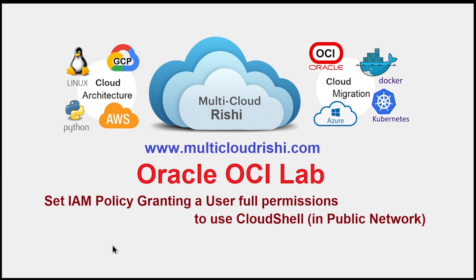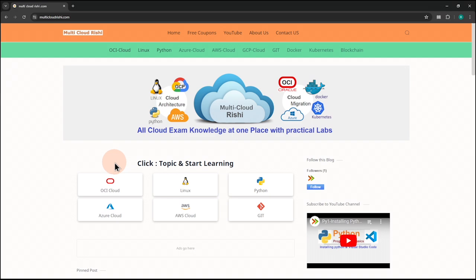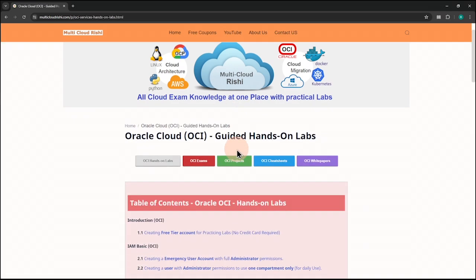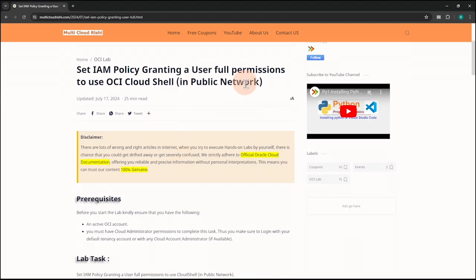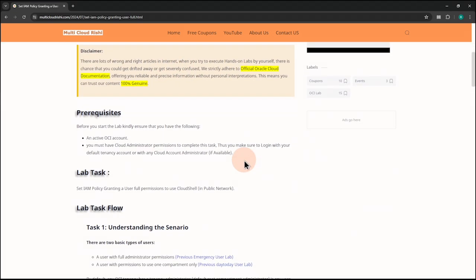Pranam friends. Today's lab is about setting IAM policy granting a user full permissions to use Cloud Shell, in a public network. All the instructions for this lab are given at www.multicloudrishi.com. For today's lab, we have to go to OCA Cloud and under the guided hands-on labs, you can find this one: Set IAM Policy. Let us start our lab.